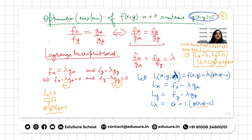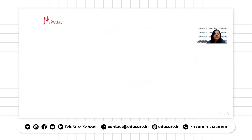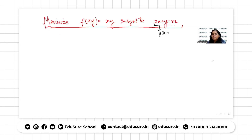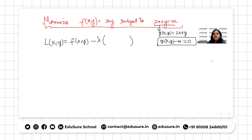For example, consider this problem: maximize f(x,y) equals xy subject to 2x plus y equals m. It is given that we need to find the maximum, so the optimum value will be a maximum. Here f(x,y) equals xy and g(x,y) equals 2x plus y, with g(x,y) minus m as the constraint term. We define L(x, y, lambda) equals f(x,y) minus lambda times (g(x,y) minus m), so L equals xy minus lambda times (2x plus y minus m).